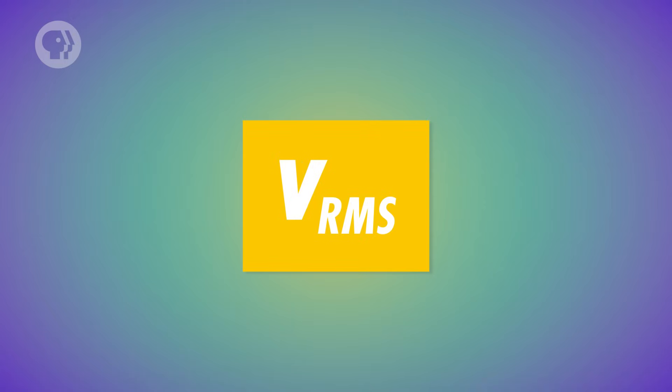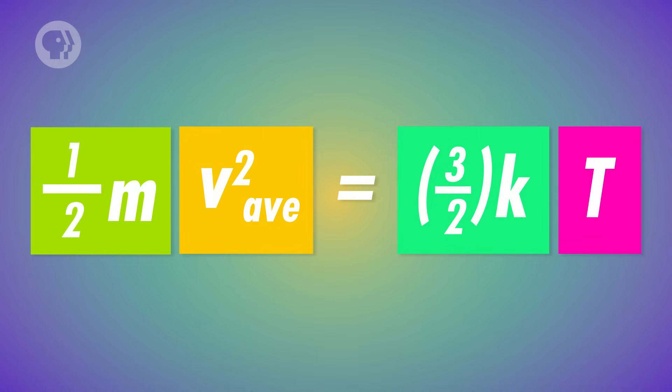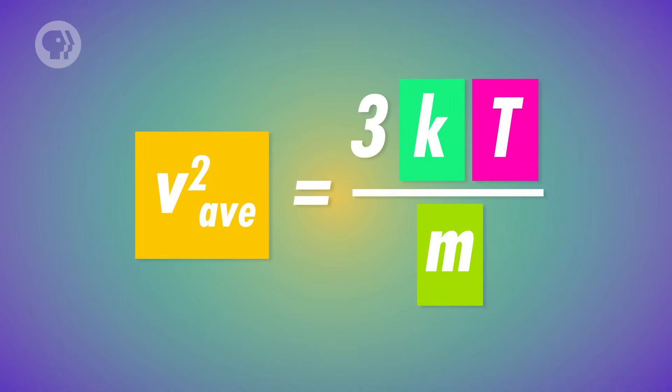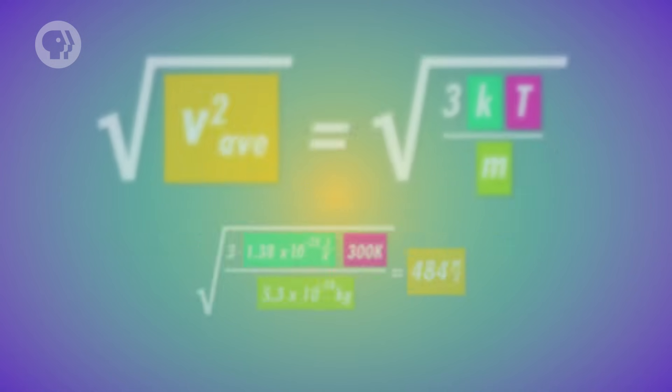We write it as v_rms, and it's a different number from the average speed. Say you know that a gas's temperature is 300 Kelvin, and the mass of each molecule is 5.3 times 10 to the minus 26 kilograms. What you want to find out is the speed of a typical molecule. We have an equation for that: half the mass times the average squared velocity is equal to 3/2 times k times the temperature. So the root-mean-square speed equals the square root of 3 times k times the temperature divided by the mass. In this case, that works out to 484 meters per second – but 484 meters per second isn't the average speed, it's the root-mean-square speed.